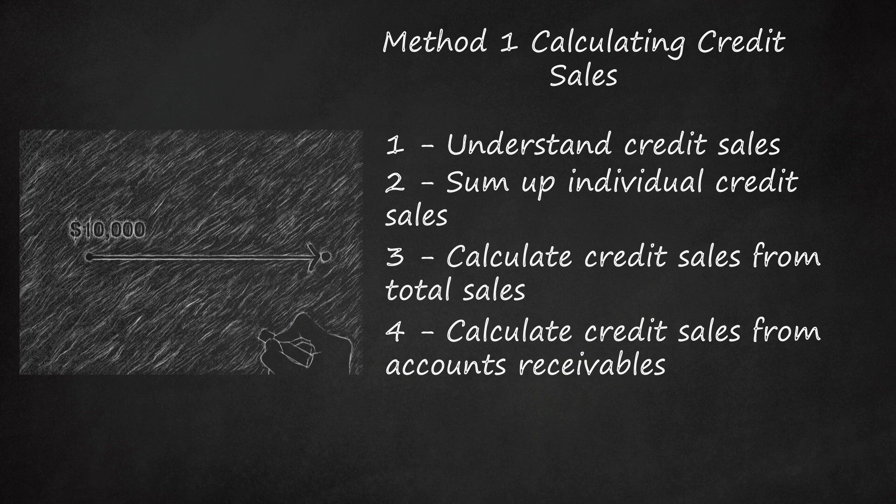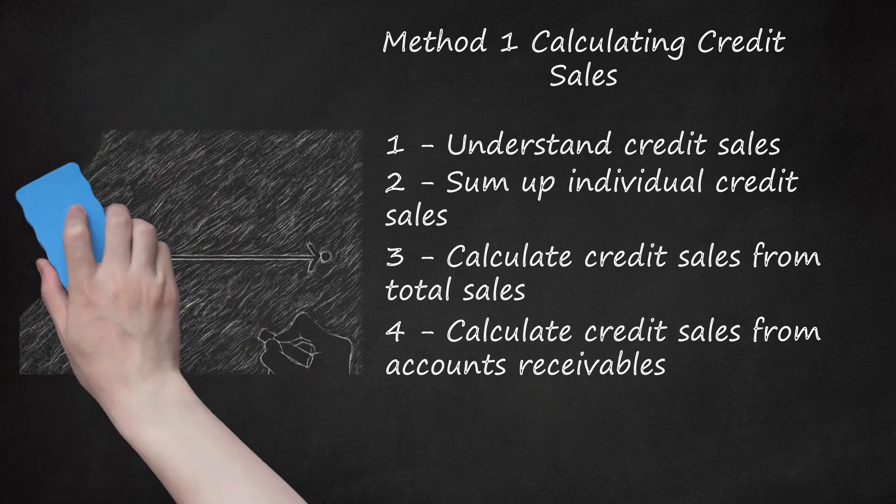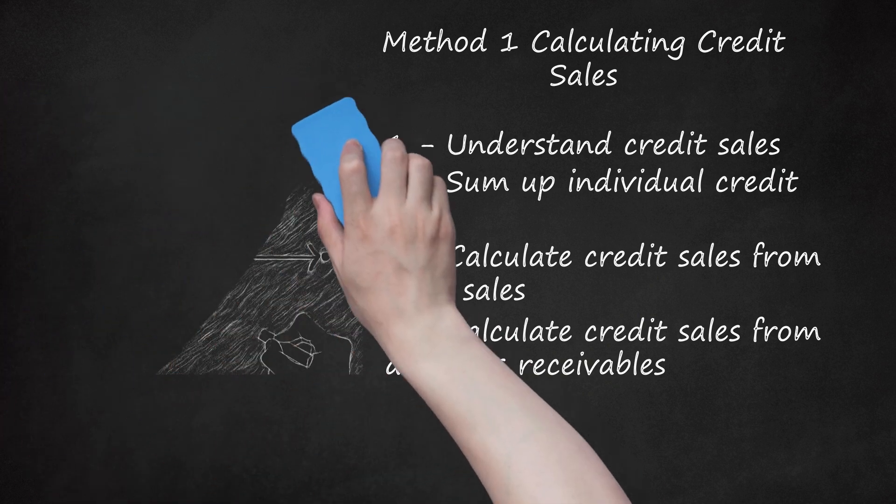Then determine the cash received. This should be in the company's records. Let the cash received for the year be $20,000. Finally, calculate credit sales by finding the difference. So the credit sales can be calculated as cash received minus initial accounts receivable plus ending accounts receivable. In the example above, it would be $20,000 minus $10,000 plus $5,000 equals $15,000. So the credit sales would be $15,000 for the year.